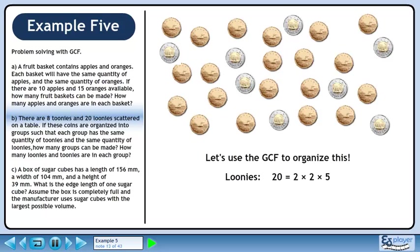There are 20 loonies, 20 is a product of 2, 2, and 5. There are 8 toonies, 8 is a product of 2, 2, and 2. Draw rectangles around the numbers common to each set. Multiply 2 and 2 to get 4, which is the GCF.